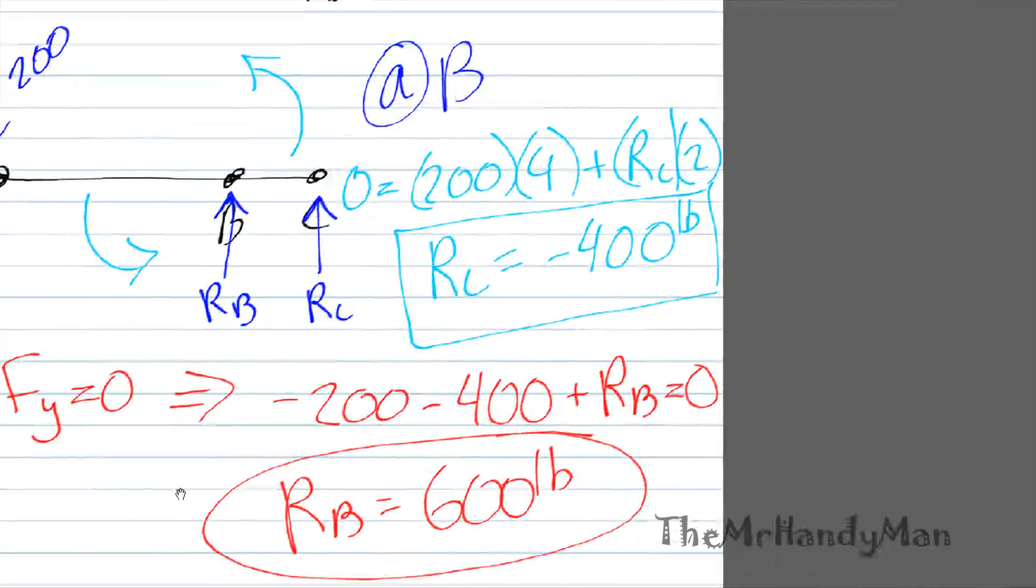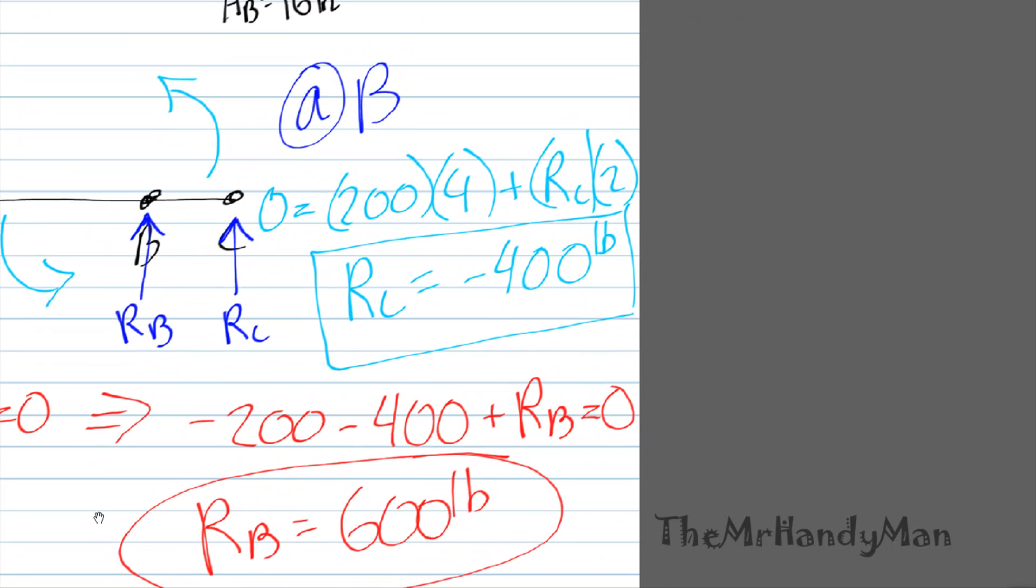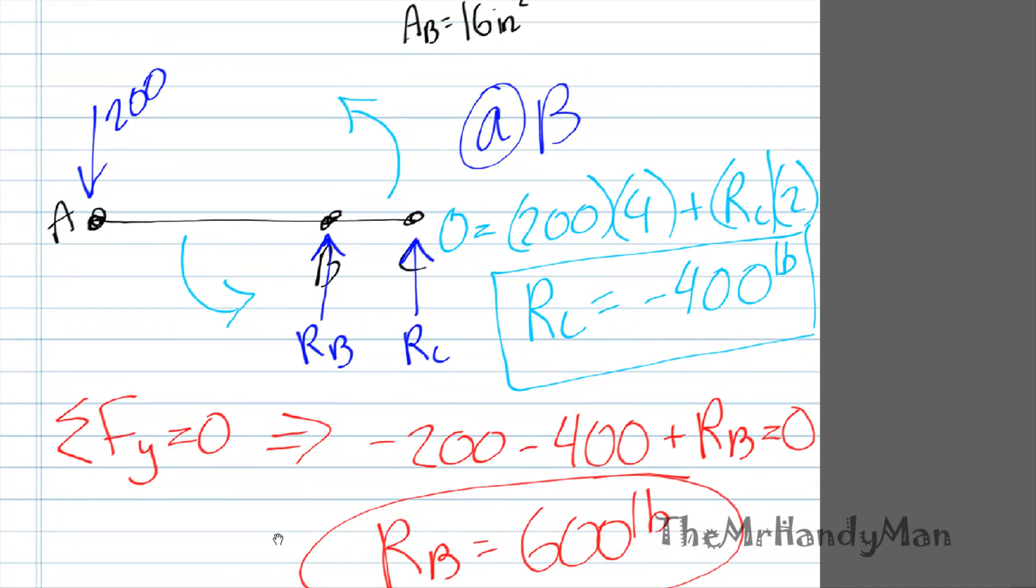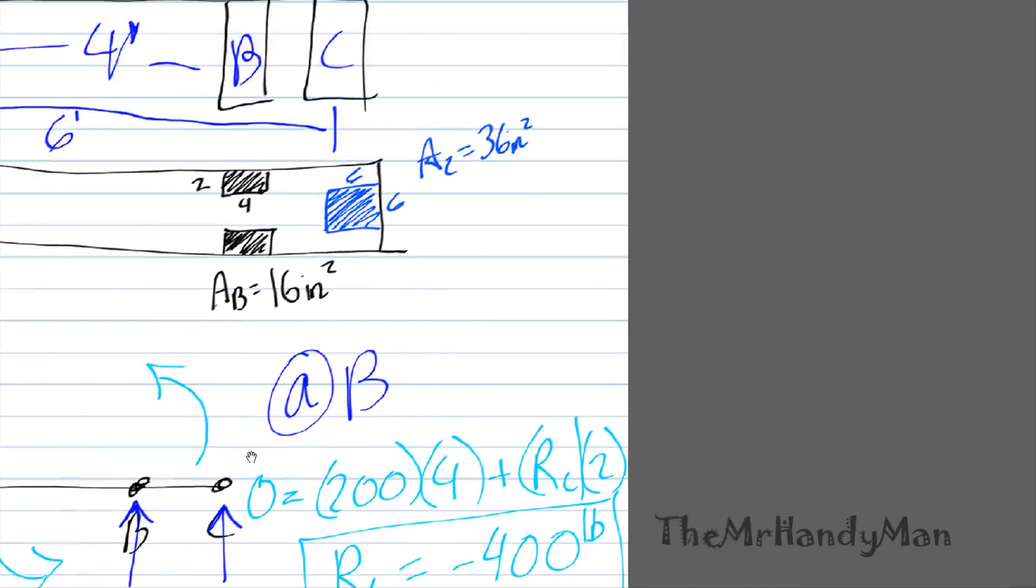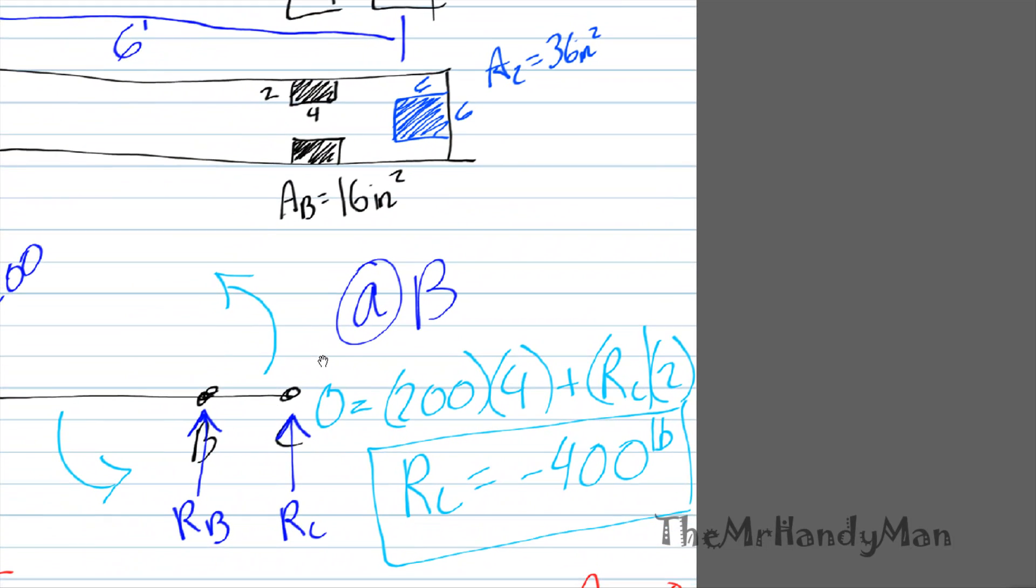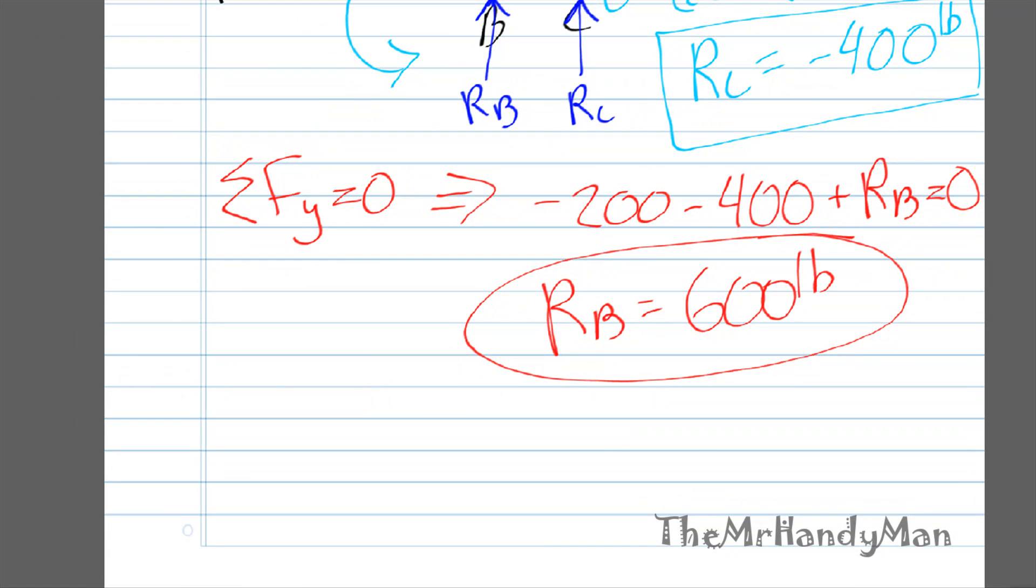Now that we have those two results, we have our RC, the reaction at C is negative 400, and you have RB is 600. What we're going to do is dive in and actually calculate the stress at points B and C. That's not too difficult. The stress at B is force over area, which is equal to 600 over 16, which equals 37.5.